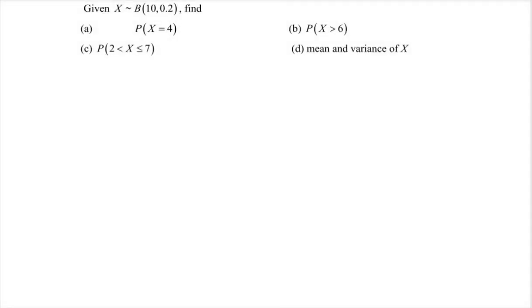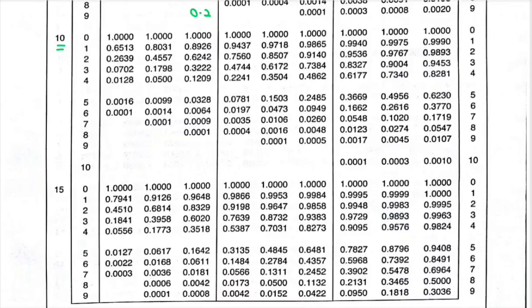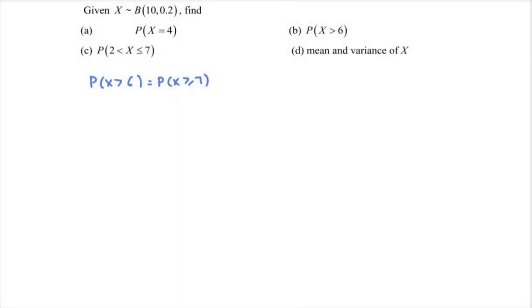Next, refer to part b, where we have the probability that X is greater than 6. The sign is important because binomial is a discrete situation, so we modify it to: probability that X is greater than or equal to 7. Referring to the table, we are interested in 7, and the value is 0.0009. So the answer is 0.0009.